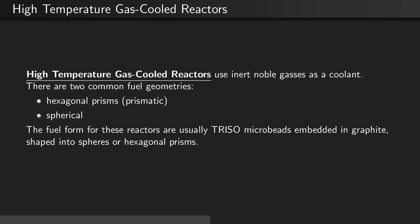The fuel form for these reactors are usually TRISO microbeads embedded in graphite, shaped into spheres or hexagonal prisms.